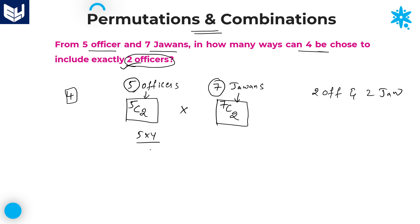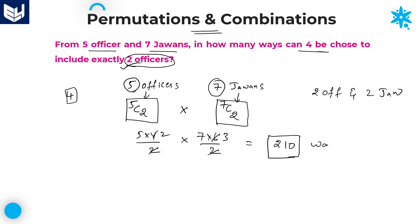5C2 = (5 × 4) / 2! = 10. 7C2 = (7 × 6) / 2! = 21. So 10 × 21 = 210. The number of ways in which exactly two officers can be chosen out of four members from five officers and seven jawans is 210 ways.